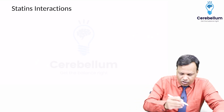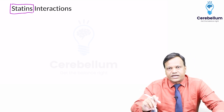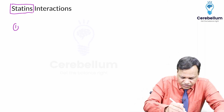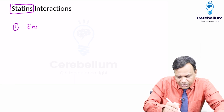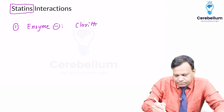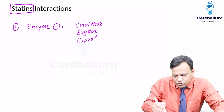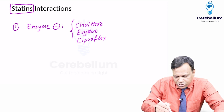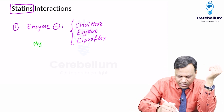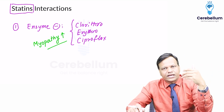The most important interactions of statins — drugs inhibiting HMG-CoA reductase like atorvastatin, simvastatin, and pravastatin — are with enzyme inhibitors like clarithromycin, erythromycin, and ciprofloxacin. These drugs inhibit the metabolism of statins, causing them to accumulate, which can lead to myopathy. There is therefore an increased risk of myopathy when statins are given with enzyme inhibitors.